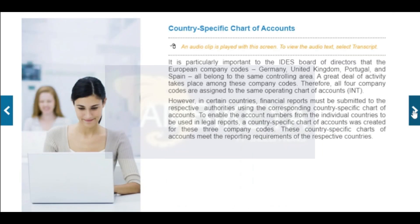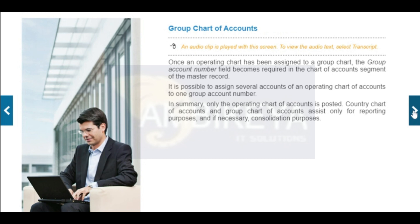In the company code segment of the master record, each GL account must be assigned to an account from the country chart of accounts of the company code. This is done using the alternative account number field, and every account number from a country-specific chart of accounts can only be used once. Not all company codes of the IDES group use the same operating chart of accounts, so a group chart of accounts — CONS — is used for consolidation purposes. The operating charts of accounts are assigned to this group chart of accounts in configuration.